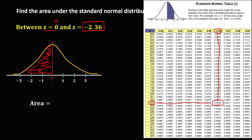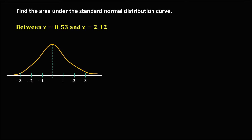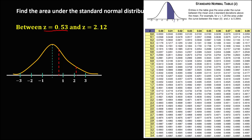The area between 0 and negative 2.36 is 0.4909. The next given is to find the area between z equals 0.53 and z equals 2.12. In a normal curve, we assume this is positive 0.53 and this is positive 2.12. First, we find the area for z equals 0.53: we have 0.5 and 0.03, that's 0.53. Connect, and the area is 0.2019.